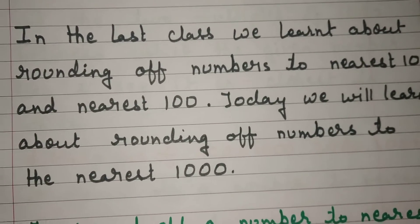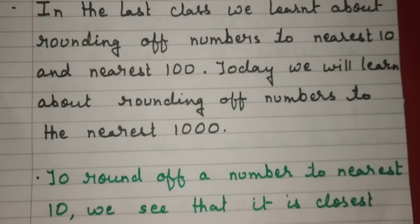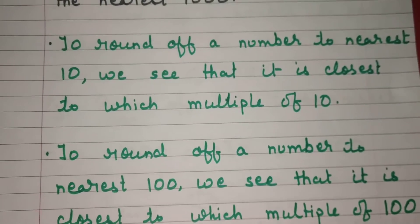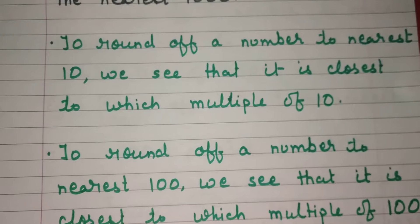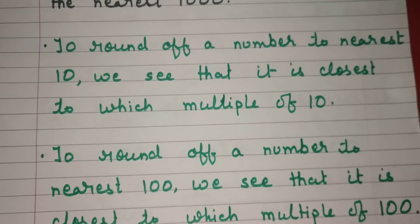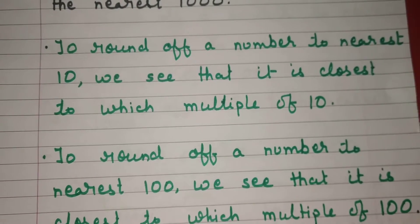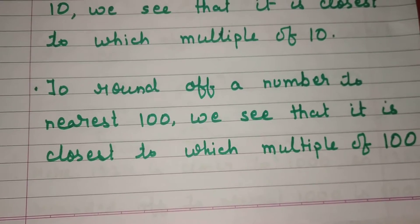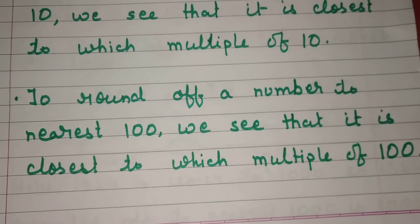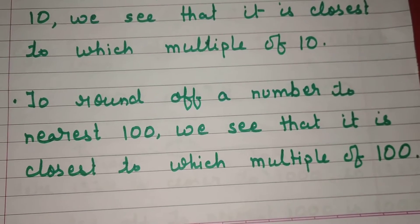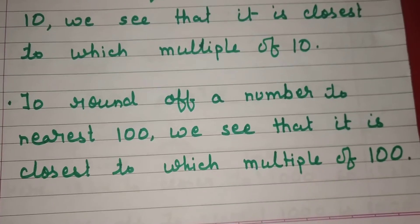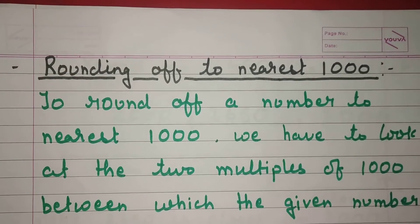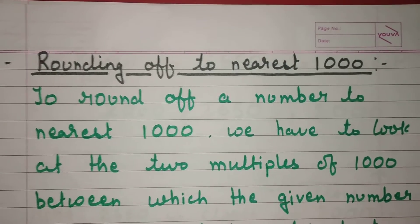To round off a number to the nearest ten, we see which multiple of ten it is closest to. To round off a number to the nearest hundred, we see which multiple of hundred it is closest to.